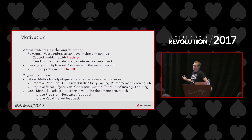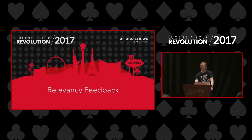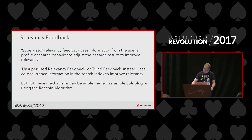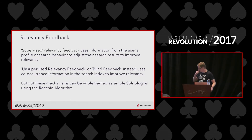I haven't seen relevancy feedback talked about much at this conference, so I wanted to bring it to your attention today. It can be used to improve precision by doing regular relevancy feedback, and there's a variation called blind feedback that can be used to improve recall. Supervised relevancy feedback uses information from the user's profile or search behavior to adjust the search results and improve precision. Unsupervised or blind feedback uses co-occurrence information between the query terms and the most relevant documents to expand the query and improve recall.